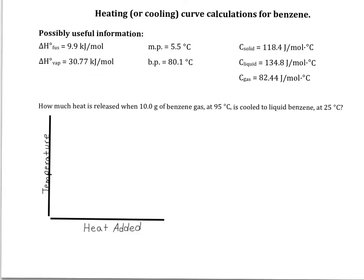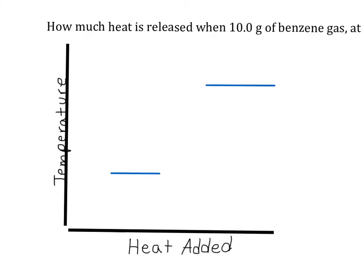The heating curve will have heat added on the x-axis and temperature on the y-axis. Most substances will have two phase changes where the temperature does not change, going from a solid to a liquid and going from a liquid to a gas. We'll draw those as flat lines. Connecting those places is where only one substance is present and the temperature is changing. Those will be diagonal lines.